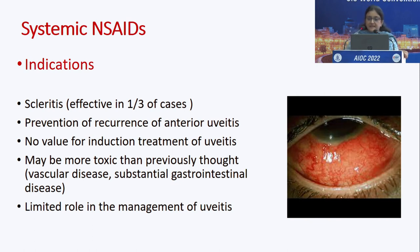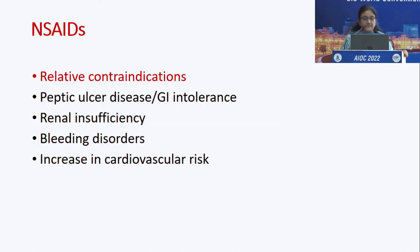Systemic NSAIDs are commonly used for scleritis cases and are found to be effective in one-third of cases. They can sometimes be used for prevention of recurrence of anterior uveitis; however, they do not have value for induction treatment of uveitis. They may be more toxic than previously thought and therefore have a limited role. Relative contraindications include peptic ulcer disease, GI intolerance, renal insufficiency, and bleeding disorders.